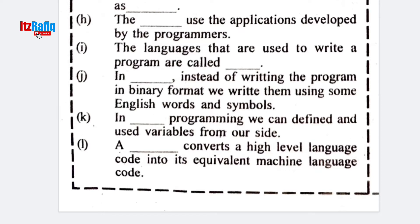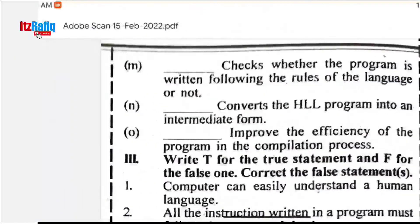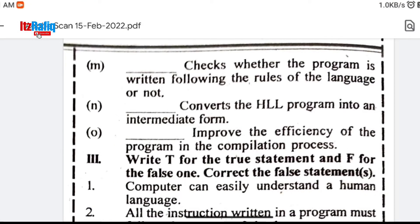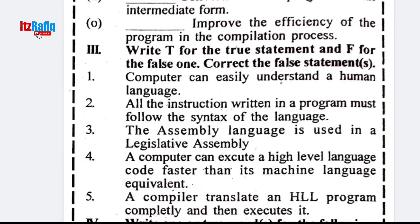In high-level language programming, we can define and use variables. A compiler converts high-level code into its equivalent machine language code and checks whether the program follows the rules of the language — this is syntax analysis. Converting a high-level program into an intermediate form is intermediate code generation. Improving the efficiency of a program during compilation is called optimization.